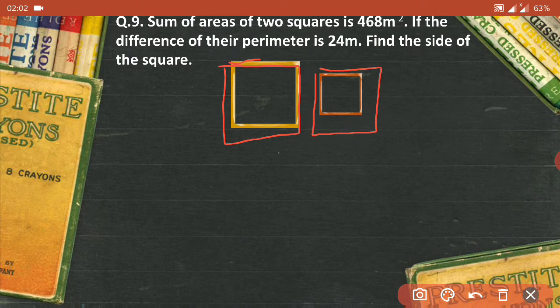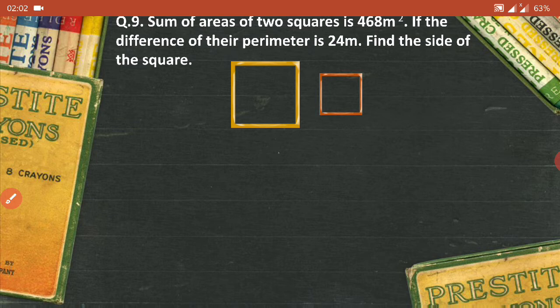That's the reason I have put a yellow color box, which is like a yellow color square which is slightly bigger than the other one, because the perimeter has some difference. If the squares were of the same size, then the difference in the parameters would be zero. Now since there is a value that is 24 meters, I can consider that one square is slightly bigger than the other.